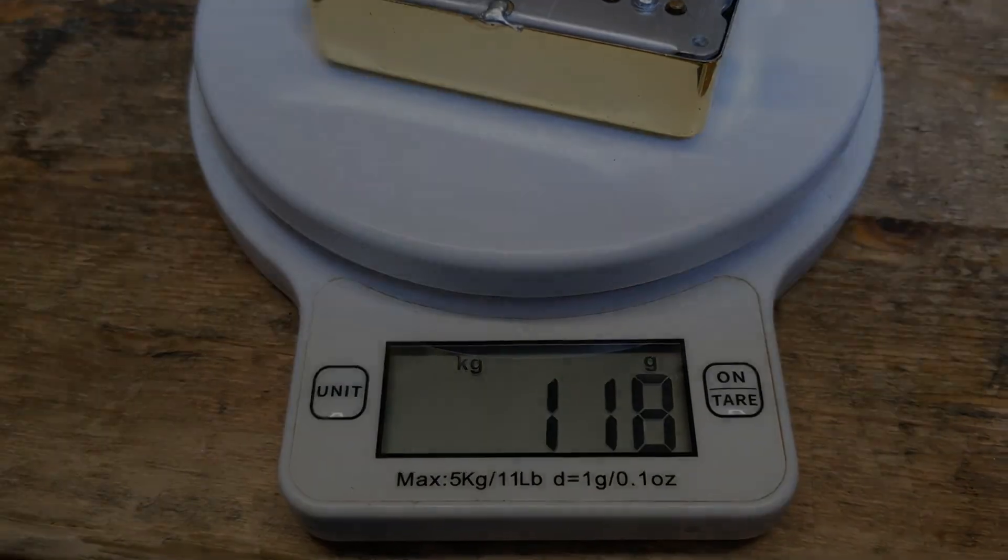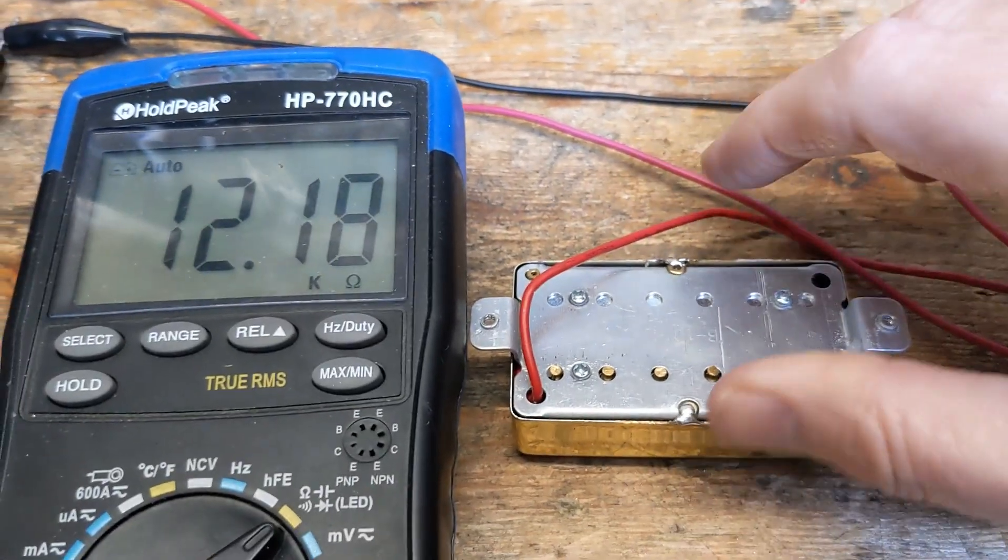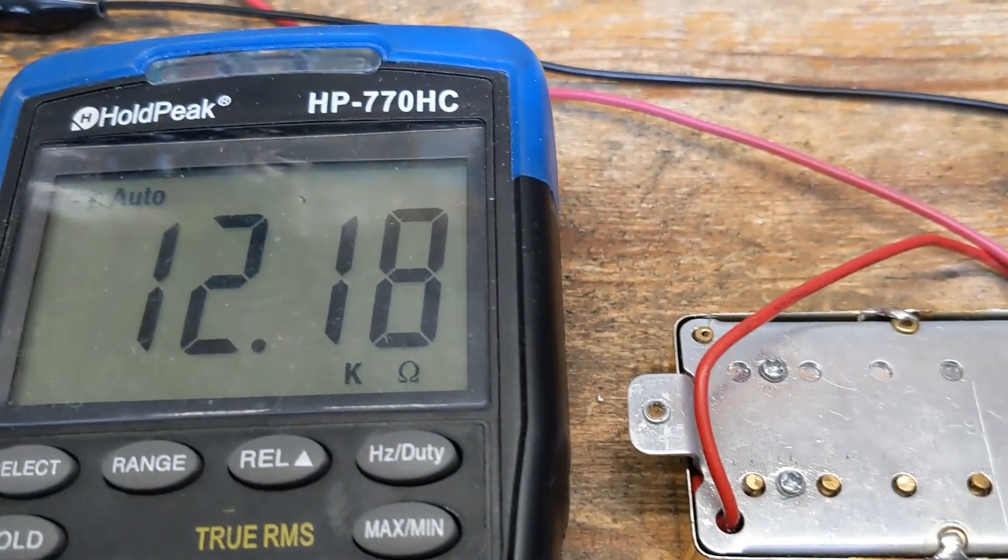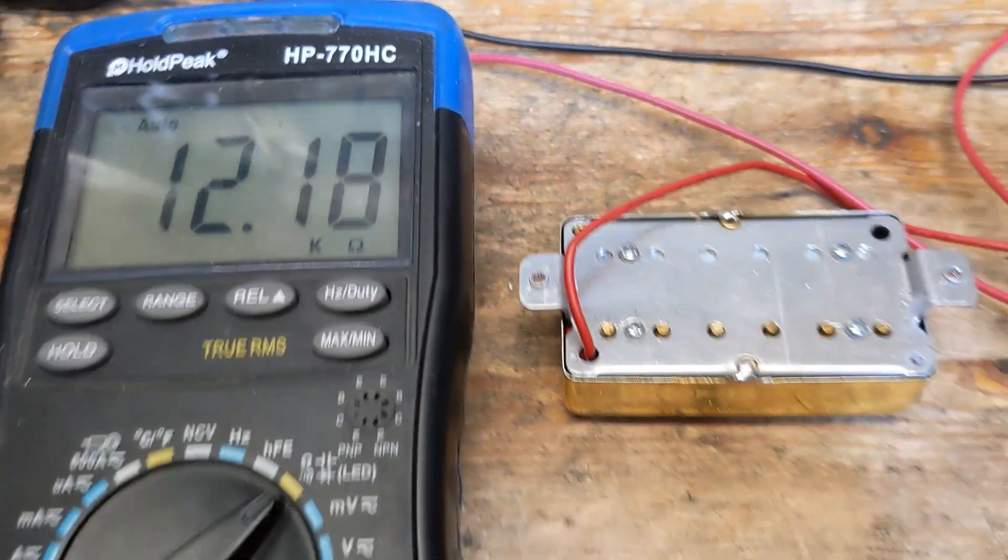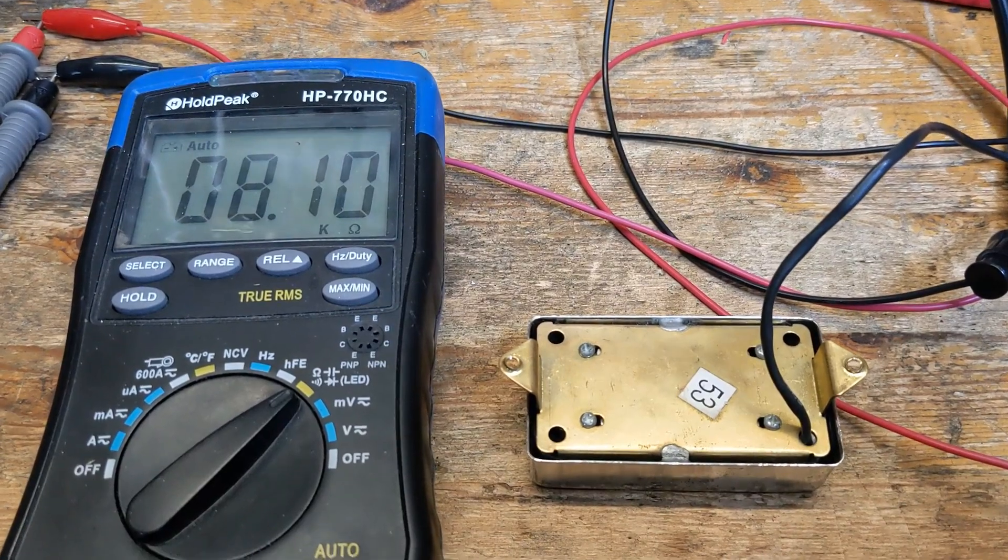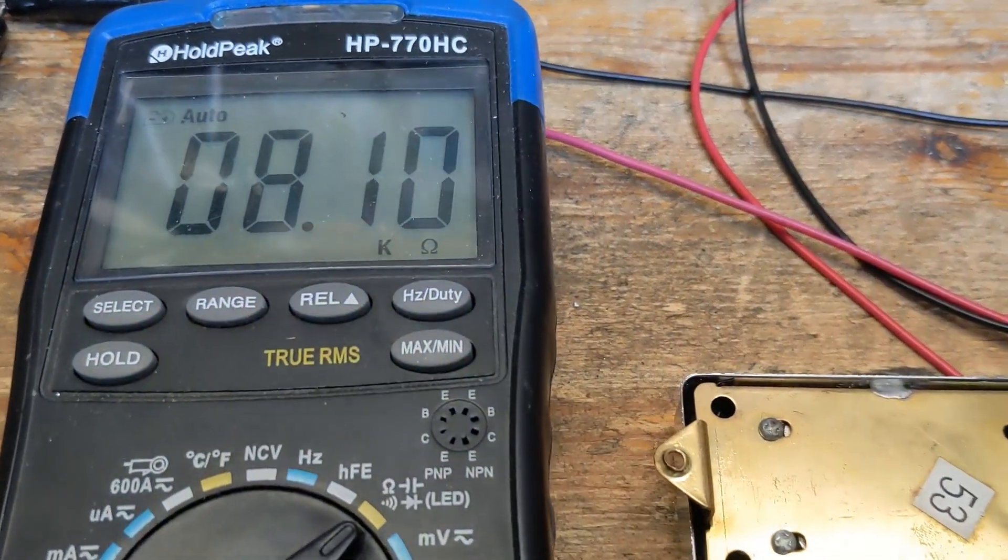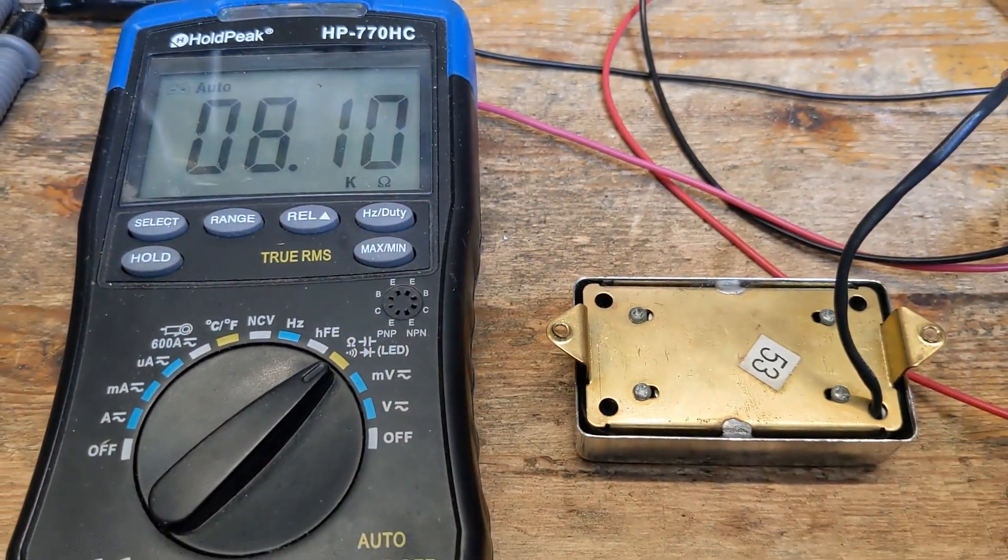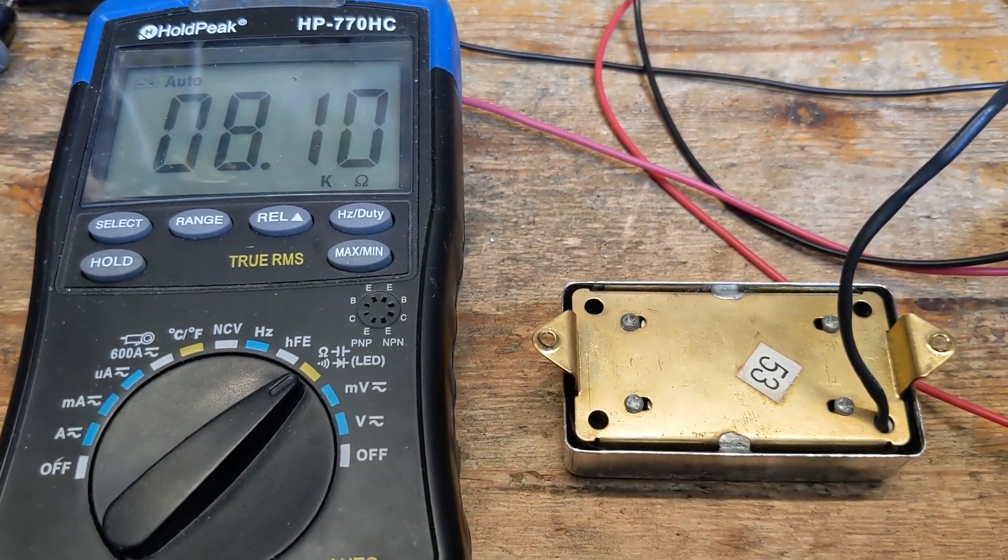Now that's interesting. So the gold one, which is the lighter one of the two, comes in at 12.18k resistance. The heavier pickup of the two comes in at 8.1k resistance. That's interesting. I would have thought it would be the other way around, but there you go.